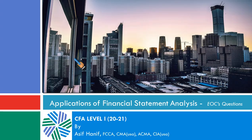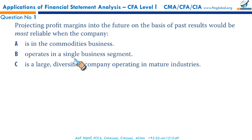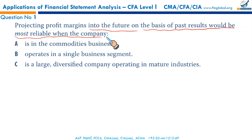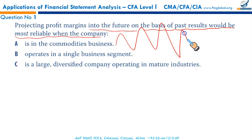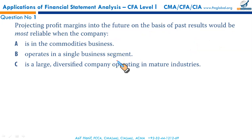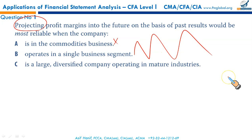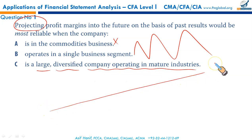Application of Financial Statement Analysis: end-of-chapter curriculum questions. First question: projecting profit margins into the future on the basis of past results would be most reliable when the company is in the commodity business? No — commodity prices are highly volatile, so projections would not be reliable. A single business segment also involves volatility, but a large diversified company operating in mature industries will have a consistent pattern of returns. That makes C the correct option.